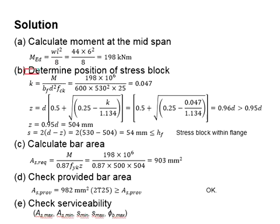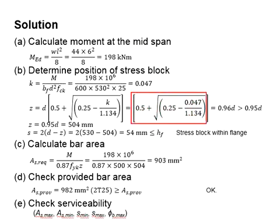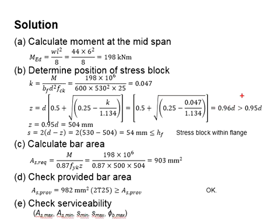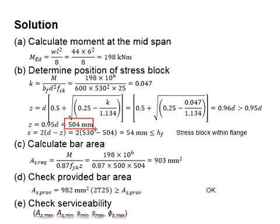Next, find the k factor of the beam, which is found to be 0.047. By substituting k into the equations, you will get z = 0.96d, which is more than 0.95d. For that, you will have to consider the lever arm as 0.95d, which is equal to 504 mm.